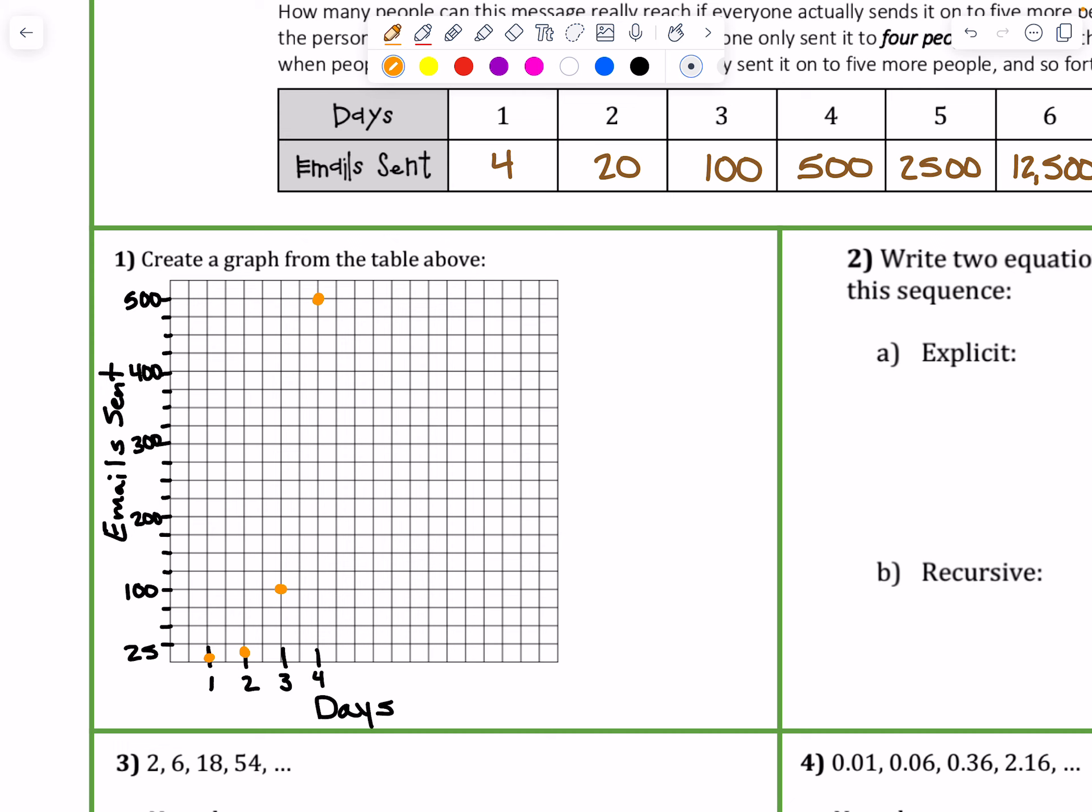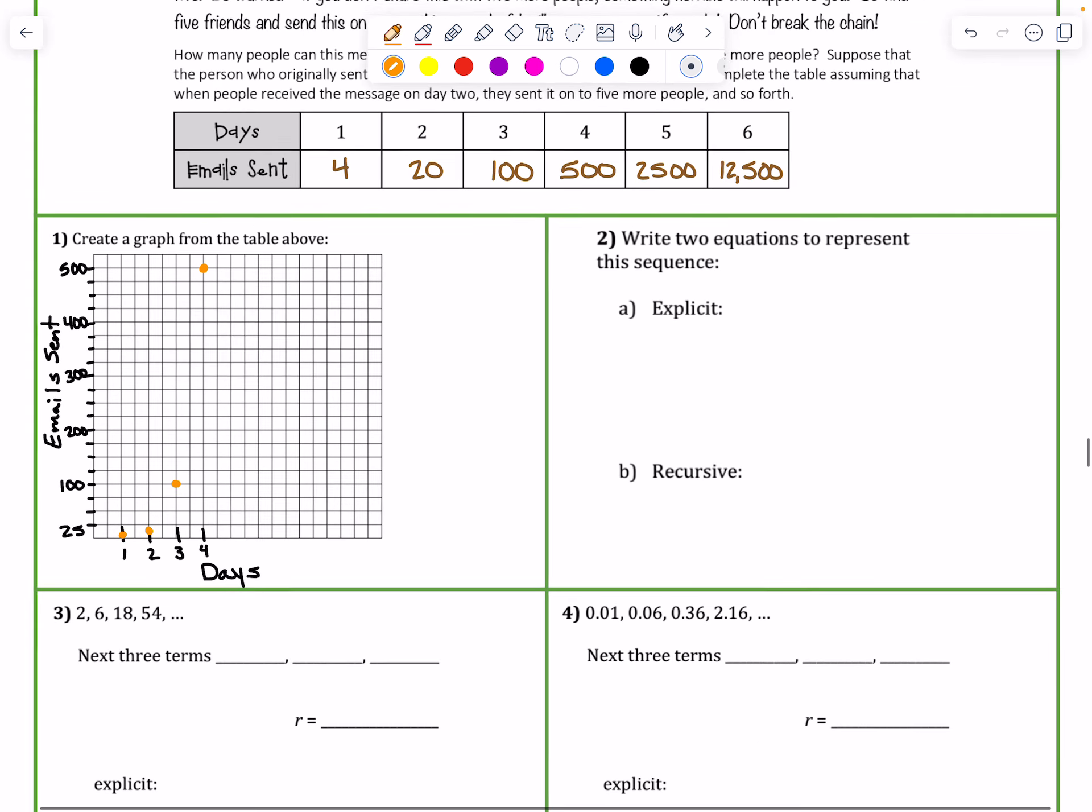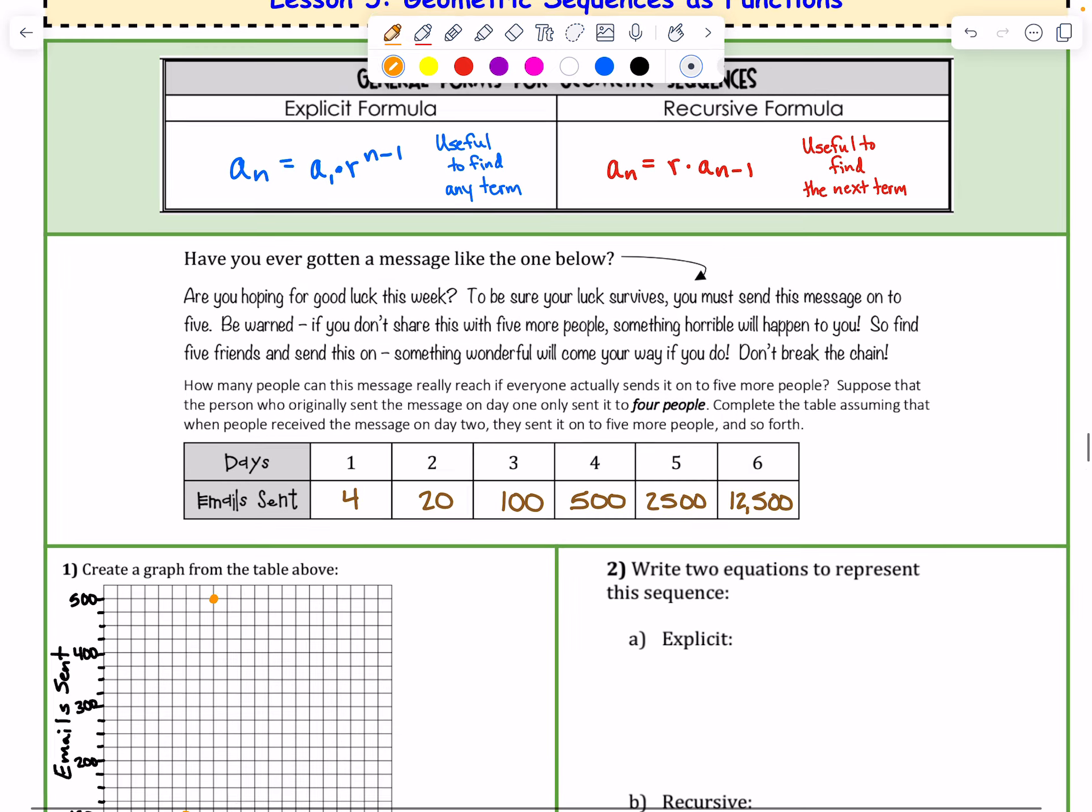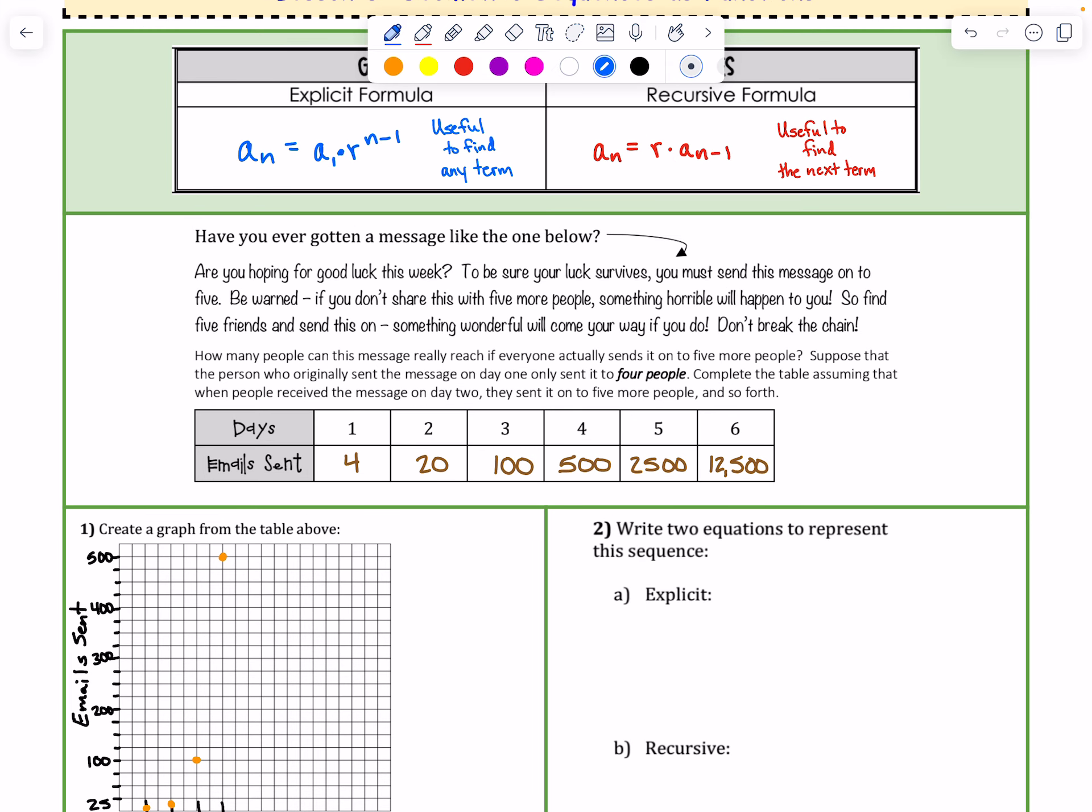So now we're going to write two equations to represent this sequence. Explicit and recursive. So refer back to the top of your page for this part. And let's pick out the first term and the common ratio. So our first term in the sequence was the 4 emails. And the common ratio R was the fact that we had to multiply each by 5. Because remember, this was times 5. This one was times 5. Like that's what was happening each time as we went. So the explicit formula is A sub N equals A sub 1 times the common ratio R to the power of N minus 1. So we have A sub N. The first term is 4. The common ratio is 5. And then we'll just leave those Ns because we don't know what term we're talking about yet.